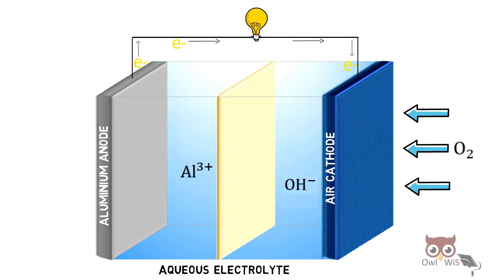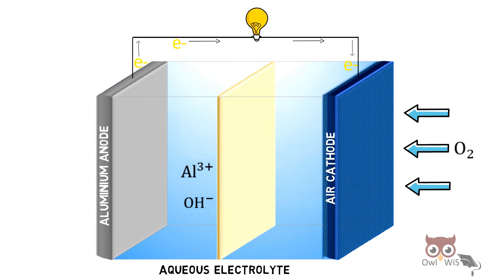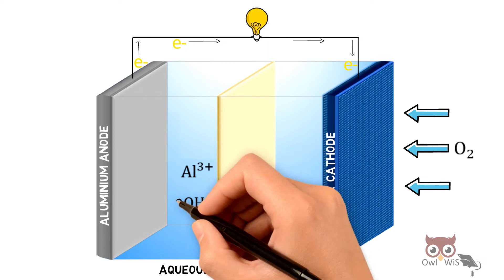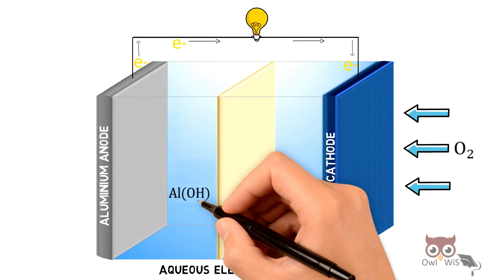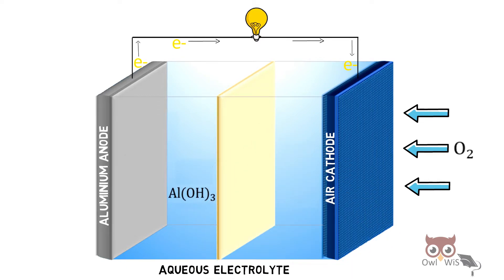These hydroxide ions reach the anode. At anode, they react with Aluminium ions in order to produce Aluminium hydroxide which gets deposited at the anode.